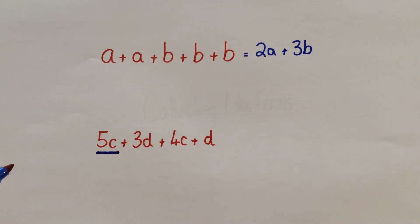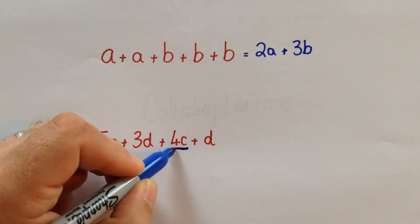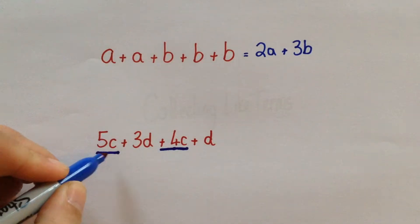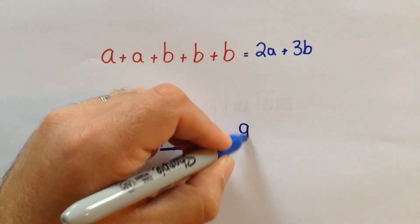And whenever we're simplifying, we always look at the symbol that is just in front of the next term. So here, the next term with C in is 4C. And just in front of that, there is a plus. So we need to do 5C plus 4C. So 9C.